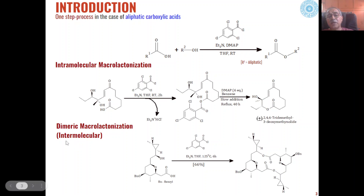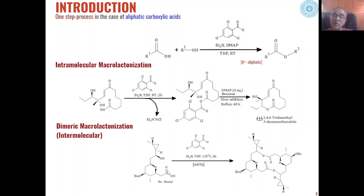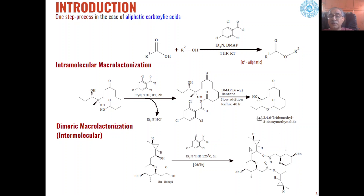Similarly, we can have intermolecular esterification also, where dimeric macrolactonization can take place. Here also we are having carboxylic acid as well as hydroxyl functional groups present within the same molecule, but two molecules of the substrate will undergo esterification such that first a mixed anhydride is formed, and then both mixed anhydrides undergo intramolecular cyclization to give us macrolactones. The overall process is intramolecular in nature.